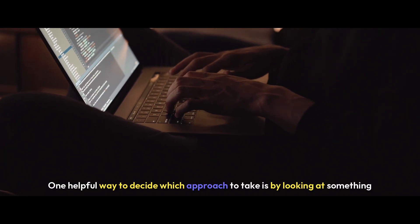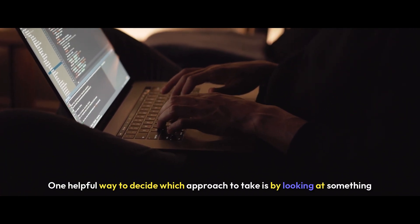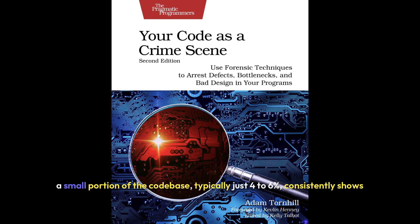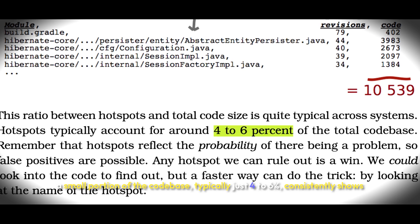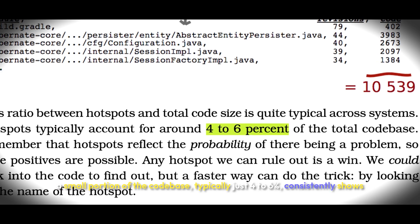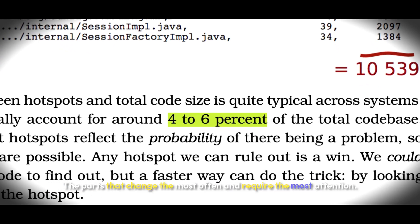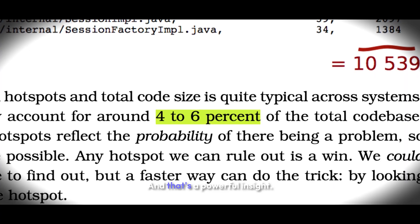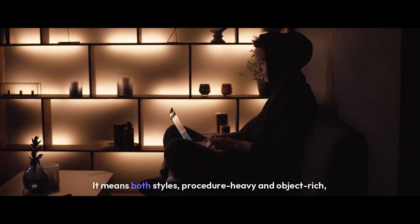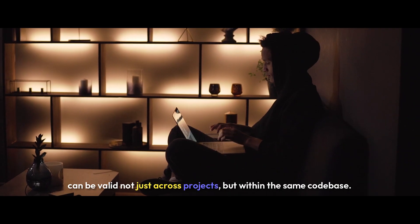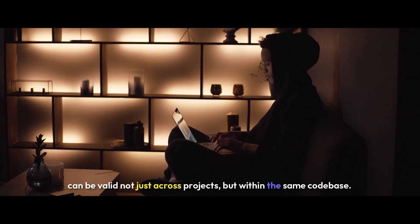One helpful way to decide which approach to take is by looking at something called code churn — the frequency with which a part of the codebase changes over time. According to the book "Your Code Is a Crime Scene," a small portion of the codebase, typically just 4-6%, consistently shows up as hotspots — the parts that change the most often and require the most attention. That's a powerful insight, because it means both styles — procedure-heavy and object-rich — can be valid, not just across projects but within the same codebase.